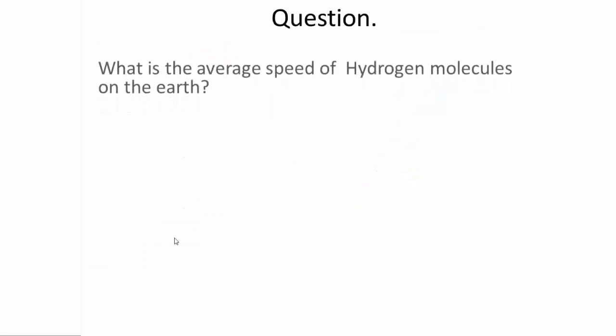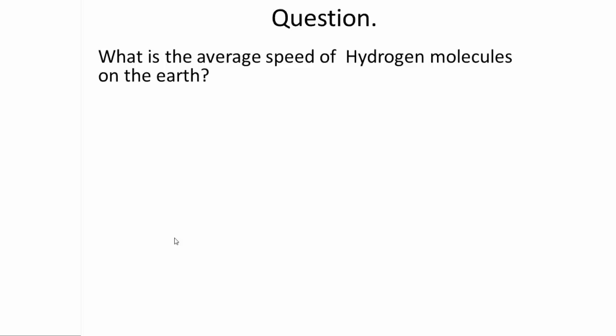Now, let's look at a question. What is the average speed of the hydrogen molecules on the Earth? Let's say the temperature of the Earth is around 300 Kelvin. The mass of a hydrogen molecule is 2 times 1.67 times 10 to the negative 27 kilograms, because it's 2 protons.